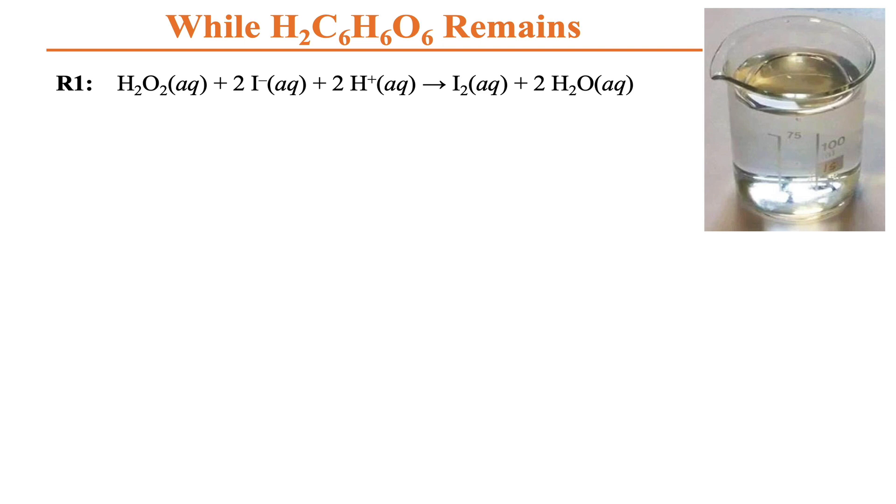Three things are going on in here, and we need to talk about what's going on and what the relative rates are. The key reaction, the one that shows that iodide and H2O2 should have an effect on rate, is what we're going to call R1. H2O2 reacts with two iodide anions and two protons H+ to form I2 and H2O.